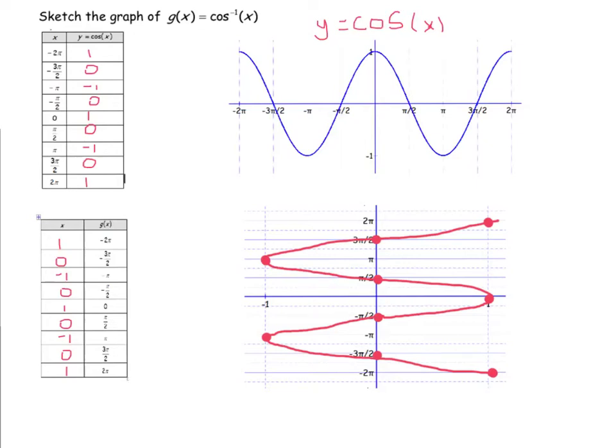Just like we motivated the inverse sine function by looking at the sine function first, switching the x's and y's, and then plotting it on our Cartesian plane, we're going to do the same thing with the cosine graph. I have it already set for you, and you'll notice that the same problem arises.